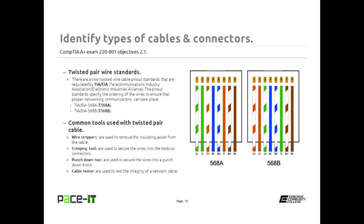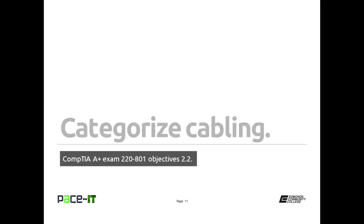The last tool to become familiar with is the cable tester, used to test the integrity of the network cable. It will tell you if there are opens or shorts, and depending on how much you spend, your cable tester can also tell you which wiring standard you are using. That about covers objective 2.1.